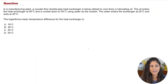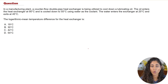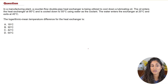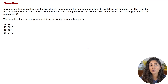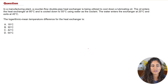In a manufacturing plant, a counterflow double pipe heat exchanger is being utilized to cool down a lubricating oil. The oil enters the heat exchanger at 95 degrees Celsius and is cooled down to 55 degrees Celsius using water as the coolant. The water enters the exchanger at 20 degrees Celsius and exits at 45 degrees Celsius.